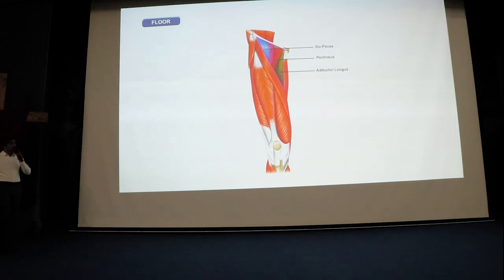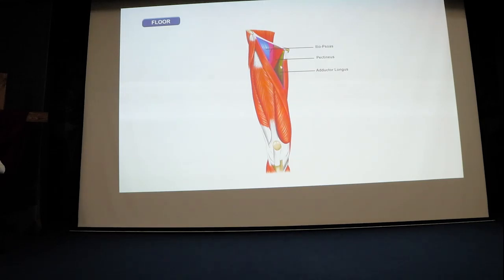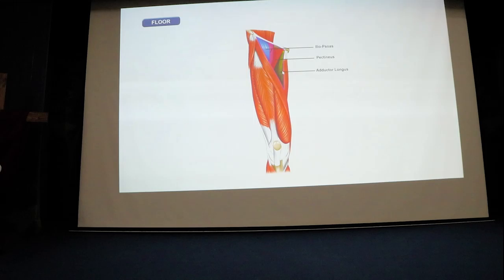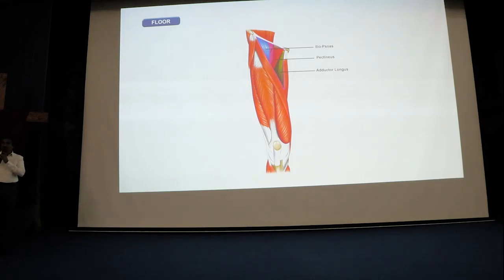The base is formed by the inguinal ligament. The medial border is formed by the medial border of the adductor longus muscle. Note that different authors mention different sites — some say the lateral border of adductor longus, some say the medial boundary. The more correct answer, especially for MCQ purposes, is the medial border of adductor longus.